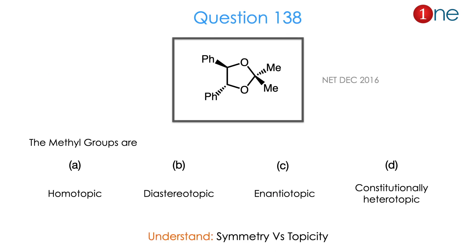In the next question, you have a 5-membered heterocyclic system with oxygen, with 1 phenyl above, 1 phenyl below, 1 methyl above, and 1 methyl below. They are asking about the relationship between the methyl groups — whether they are homotopic, diastereotopic, enantiotopic, or constitutionally heterotopic. The question is really about symmetry versus topicity. The answer is A.